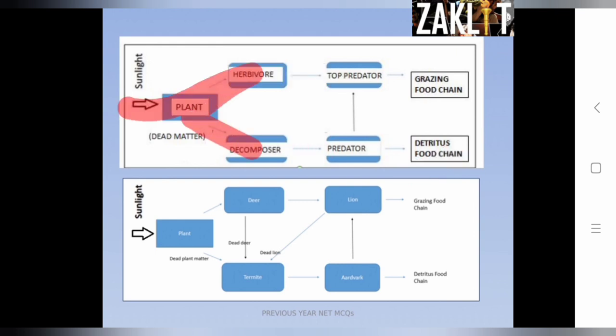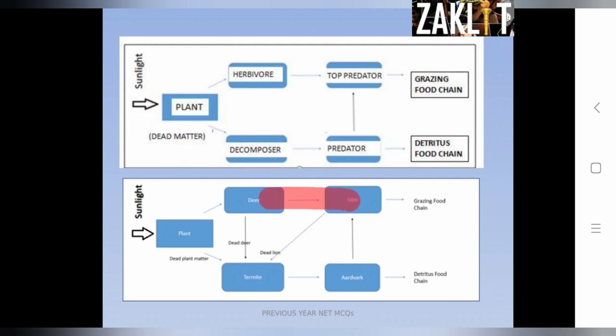For example: a plant is eaten by a deer, and the dead plant is eaten by termites. The deer is then eaten by a lion, and the termite is eaten by the aardvark — illustrating the two arms of the Y-shaped model.